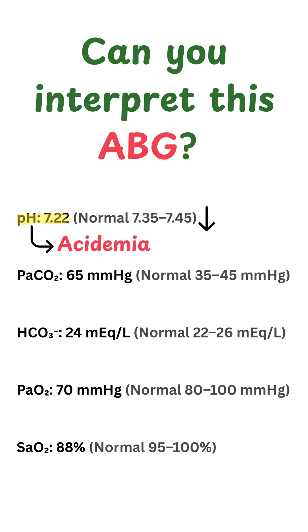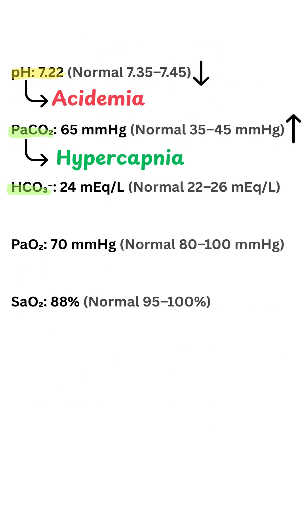Moving on to step two. In step two, we have two players: the partial pressure of carbon dioxide and bicarbonate. The partial pressure of carbon dioxide is 65 here, which is more than normal, so we can say that we have hypercapnia. Bicarbonate, on the other hand, is 24 — that's within the normal range of 22 to 26.